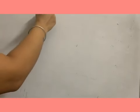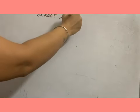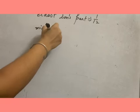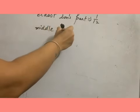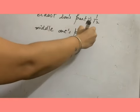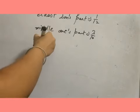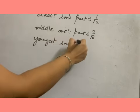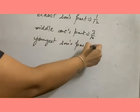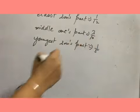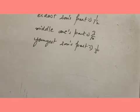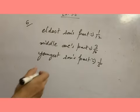So the eldest son's part is 1/12, and the middle one's part is 3/10. And now the youngest son's part is 1/5. Now we have to arrange these fractions into ascending order.